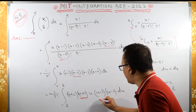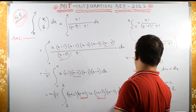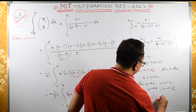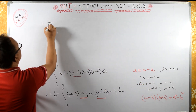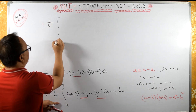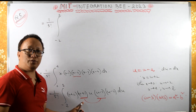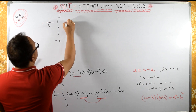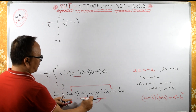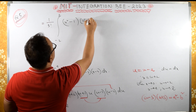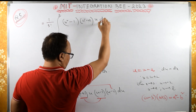Now notice that we have (u+1) and (u-1), which is of the form (a+b)(a-b) = a² minus b², giving u² minus 1. Similarly, (u+2)(u-2) gives u² minus 4. So combining, this becomes 1 over 5 factorial times the integral from minus 2 to 2 of u times (u² minus 1) times (u² minus 4) du.